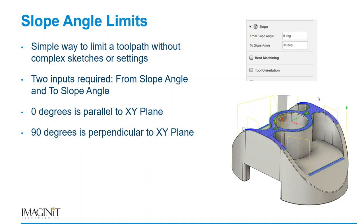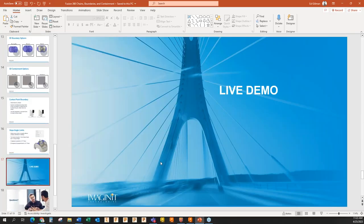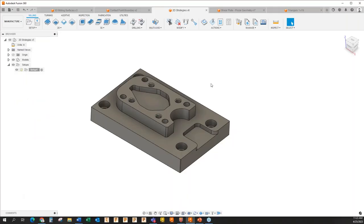The slope limits cut away portions of the toolpath not between the specified angle bounds. Zero degrees is parallel to the XY plane (flat), 90 degrees is perpendicular (vertical). Setting from 0 to 30 machines only flat and shallow surfaces up to 30 degrees — steep sections are cut away. Switching to from 30 to 90 degrees machines only the steep sections. This is a neat way to limit your strategy to areas where it's efficient. For instance, a parallel toolpath works well on flat surfaces but not steep ones where a contour or scallop is better. That's a high-level intro to what I'm going to show in the live demo.